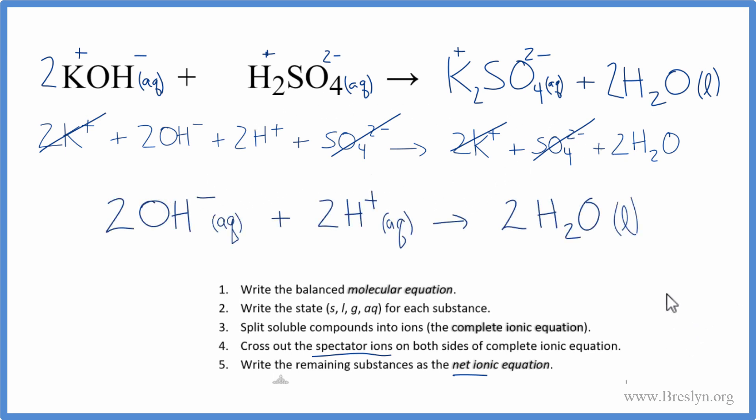So that's the net ionic equation for KOH plus H2SO4, potassium hydroxide plus sulfuric acid. This is Dr. B, and thanks for watching.